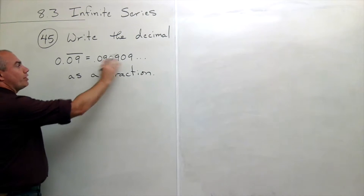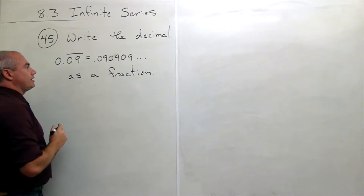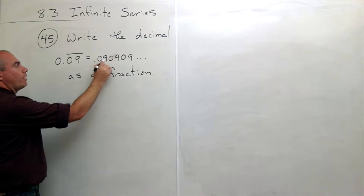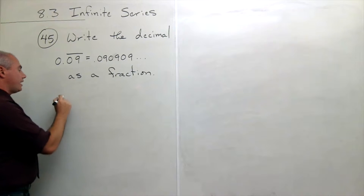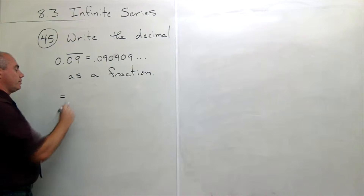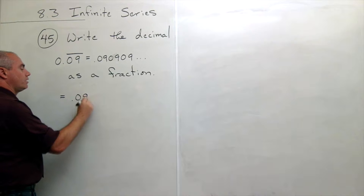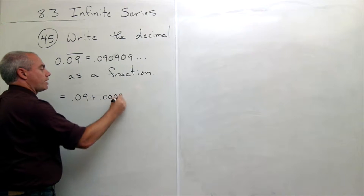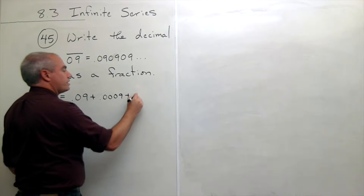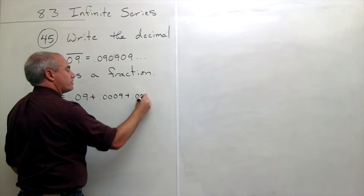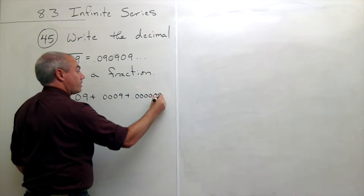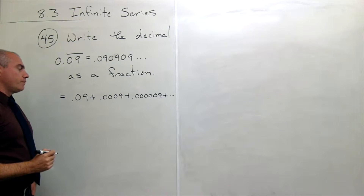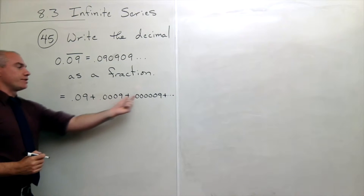The first thing I'm going to do is rewrite this slightly differently. If I've got 0.0909..., I can say that's equal to 0.09 plus 0.0009 plus 0.000009, and so on.